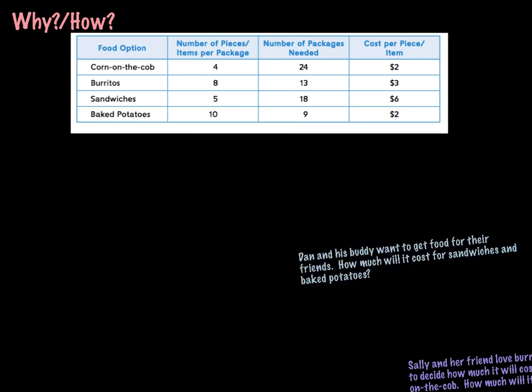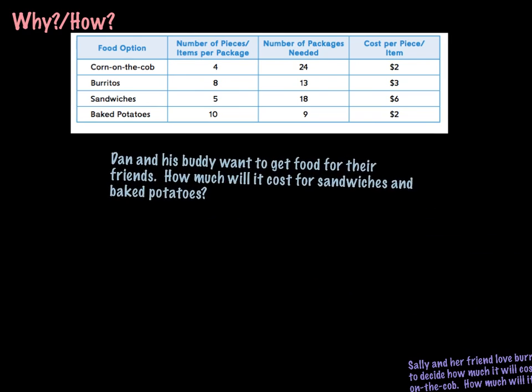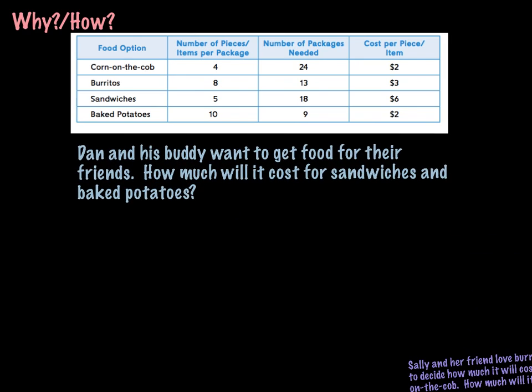So let's take a look at the first problem that I'm going to have you try to solve today. Dan and his buddy want to get food for their friends. How much will it cost for sandwiches and baked potatoes? So what we're going to do in this situation is we're going to look at the sandwiches row here, and we see going across that there's 5 items per package, there's 18 packages needed, and they're $6.